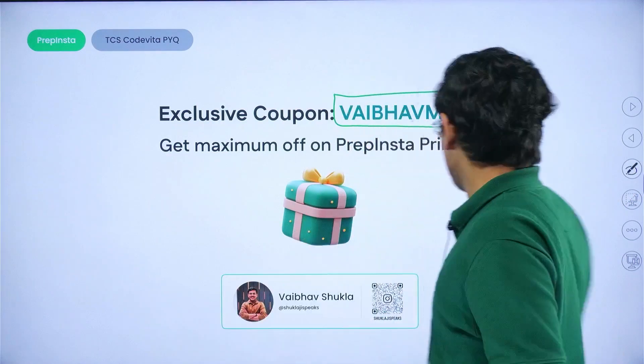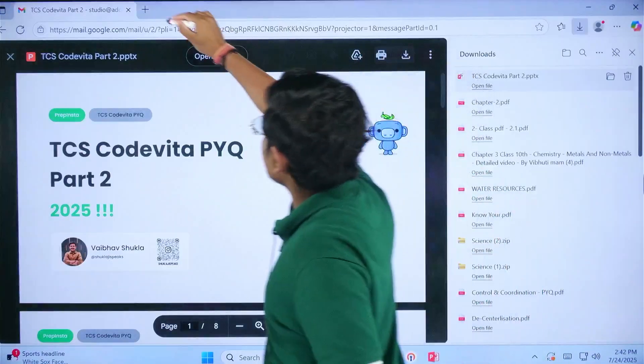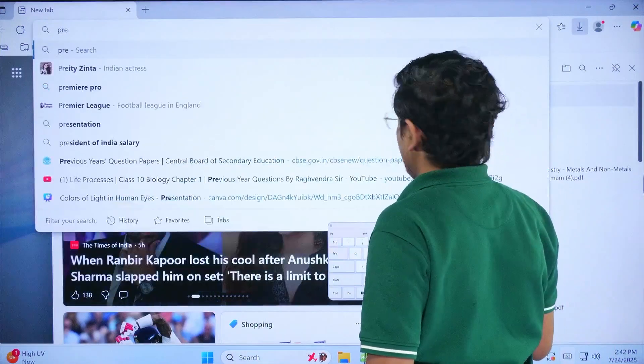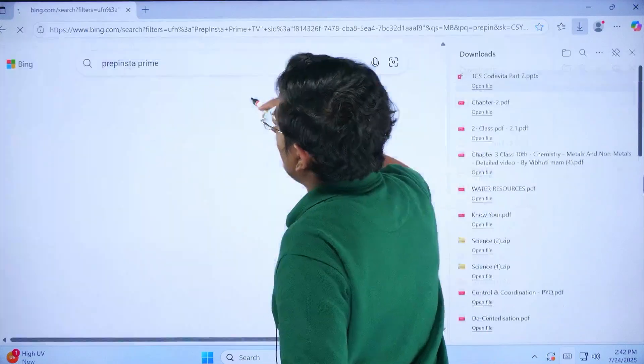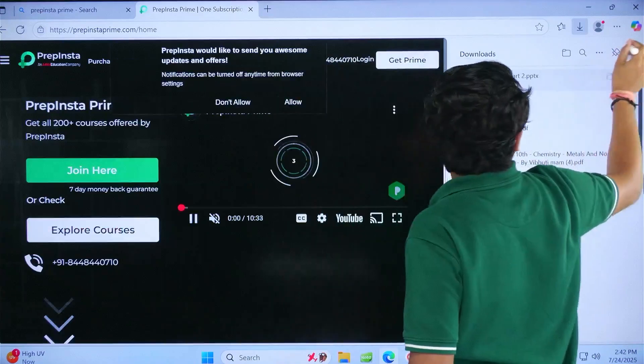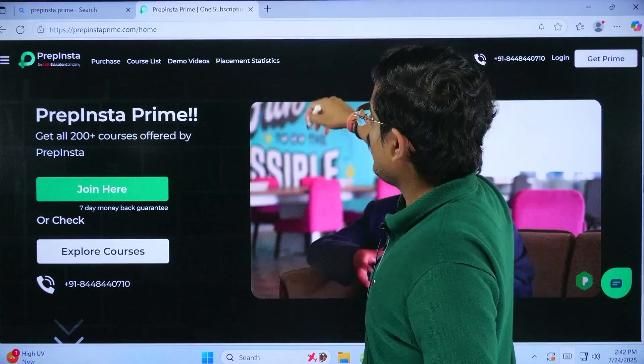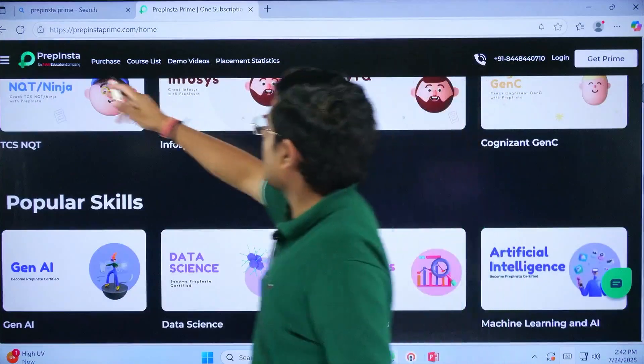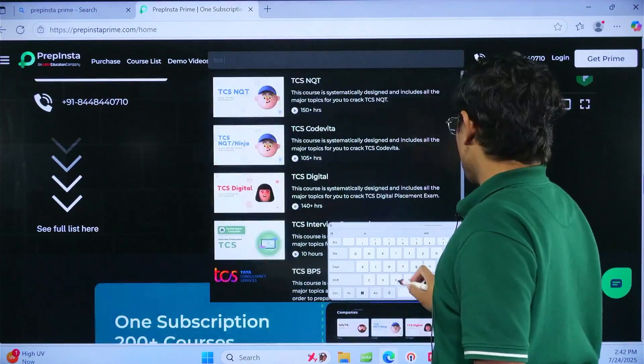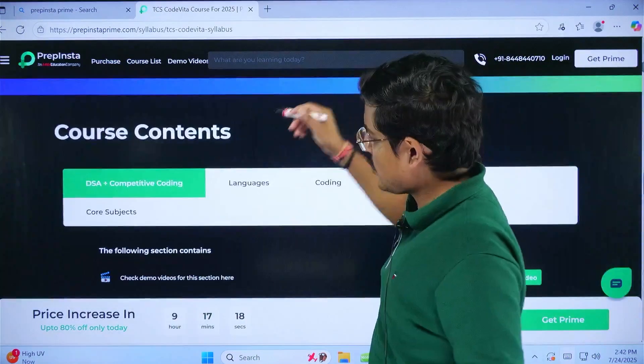Now go ahead and apply this particular coupon code webofmax on PrepInsta Prime. Why am I sharing this with you? I could have easily ended this here, but the reason I'm sharing this with you is because if you see carefully, the time that you have basically at your end is very less. So you need a structured course for preparation of CodeVita. So how would you do that? You simply go ahead on prepinsta.com. And if you see carefully in this particular website, you would find this search bar and you simply go ahead, TCS CodeVita.